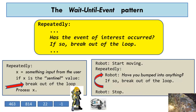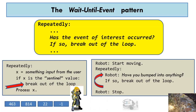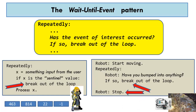In the example on the right, a robot starts moving, waits until it bumps into something, then stops. Inside the wait-until-event loop, the program repeatedly asks the robot, have you bumped into anything? The answer might be no, then no again, then no again — then finally yes. At that point, the program breaks out of the loop and the robot stops.